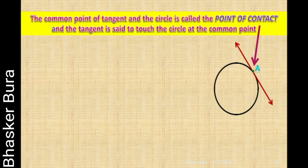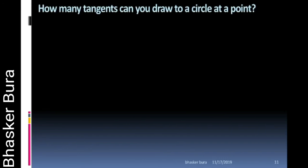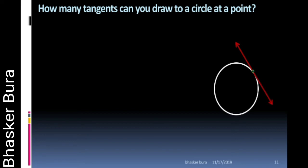At this point the circle and the tangent are touching each other. How many tangents can you draw to a circle at a point? If we consider a circle and take a point on the circle, through that point only one tangent is possible.